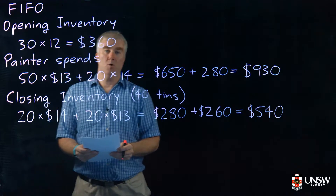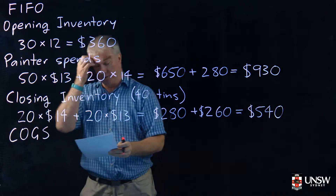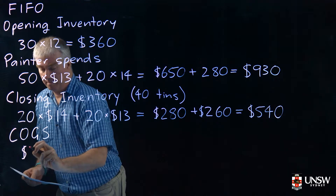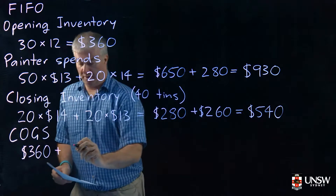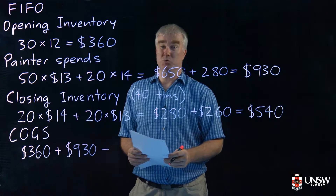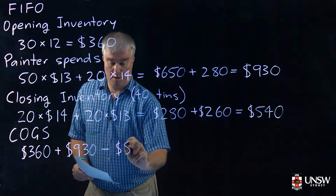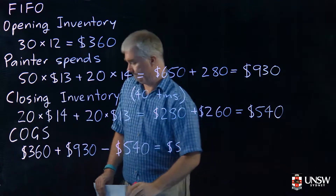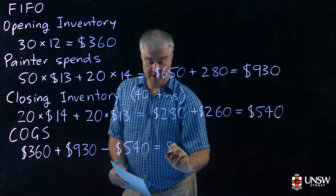Now we just need to work out the cost of goods sold. Cost of goods sold equals the opening inventory of $360, plus the money we spent which is $930, minus the value of our closing inventory — the paint we still have — so minus $540, which gives us $750.